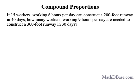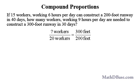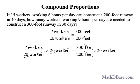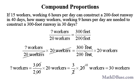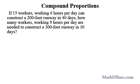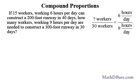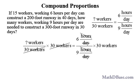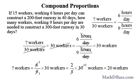To calculate workers needed to build a 300-foot runway in 30 days, the unknown workers over 20 workers equals 300 feet over 200 feet. Solving gives 30 workers for the 300-foot runway. Since 30 workers build the 300-foot runway working six hours per day, working nine hours per day requires an unknown workers over 30 workers equal to six hours over nine hours. This reduces to 20 workers required.